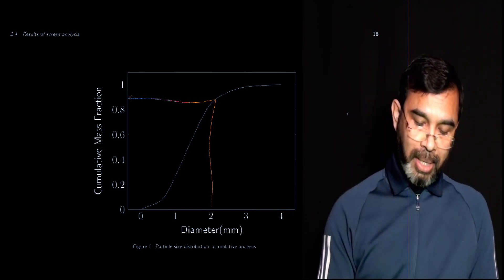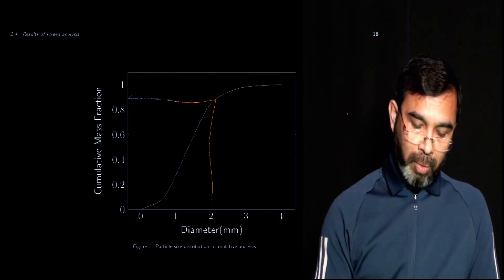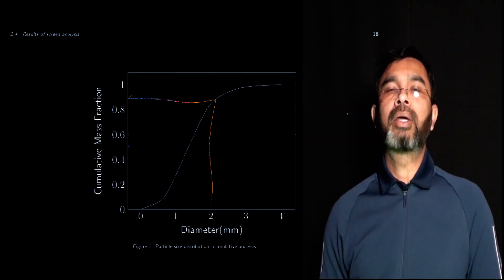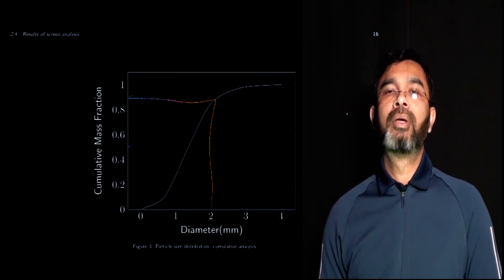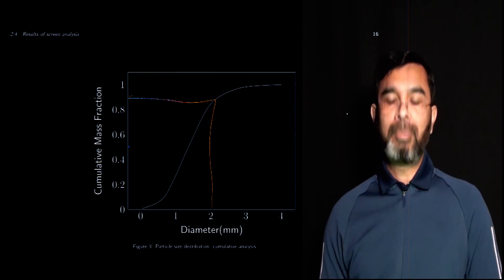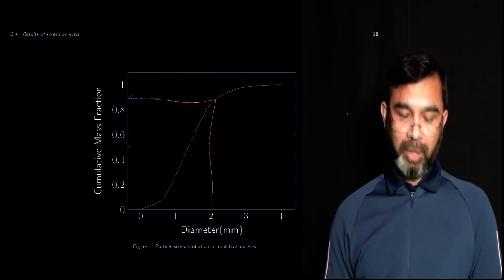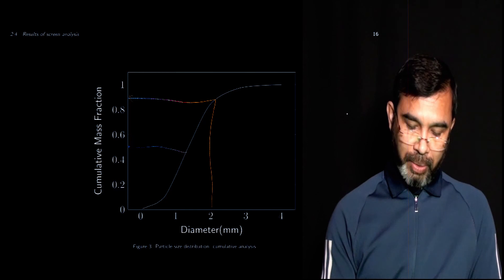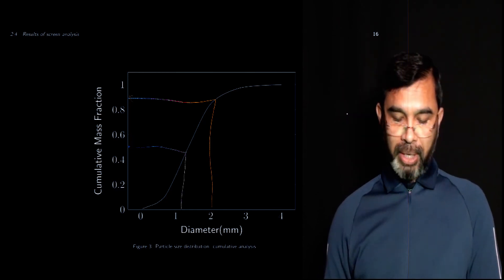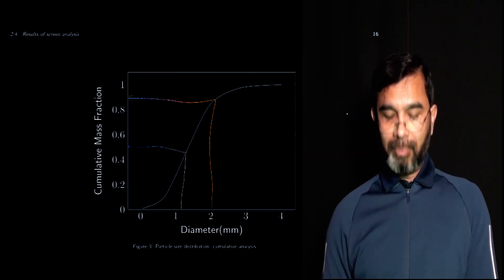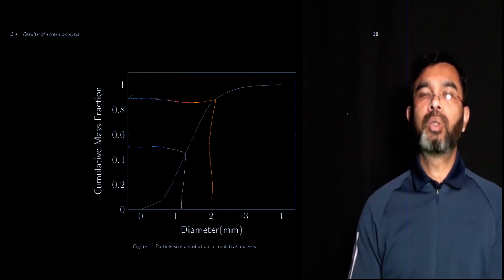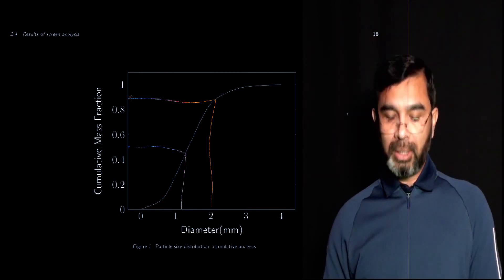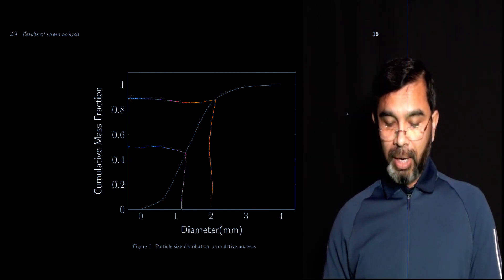A commonly used metric is the size below which 50 percent of particles fall, sometimes written as D50. From the cumulative distribution graph, you can read that 50 percent of the particles are below approximately 1.2 millimeters in size. These are some of the practical uses of the histogram and cumulative size distribution graphs obtained from sieve analysis.